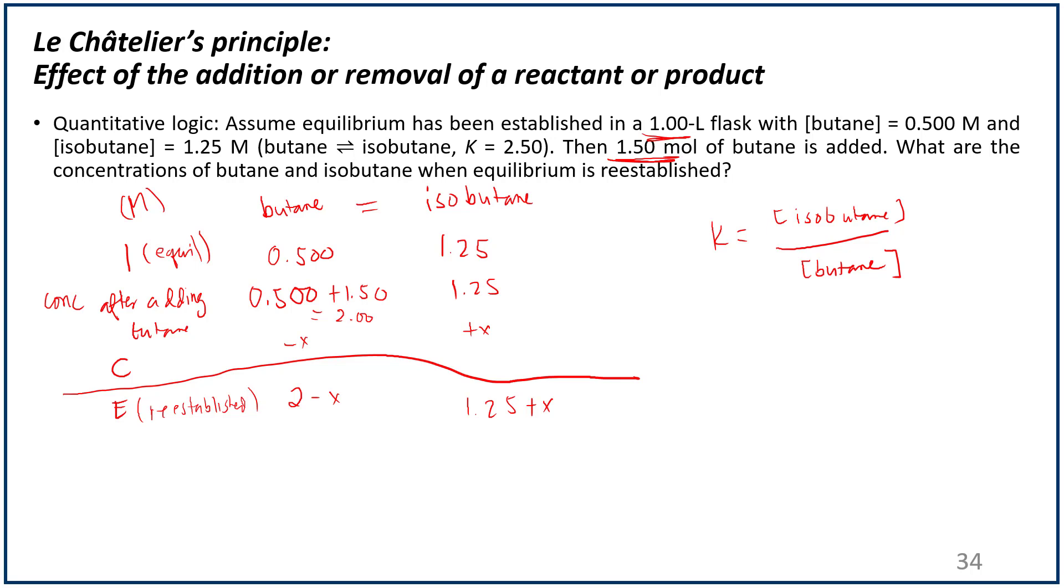We can plug in these values. We have a value of K actually, so that's 2.50. The concentration of isobutane upon re-reaching equilibrium should be 1.25 plus X divided by 2 minus X, which will equal to 2.50. 2 minus X is equal to 1.25 plus X. I'm just going to jump the gun here, and the answer here should be X is equal to 1.08 molar.